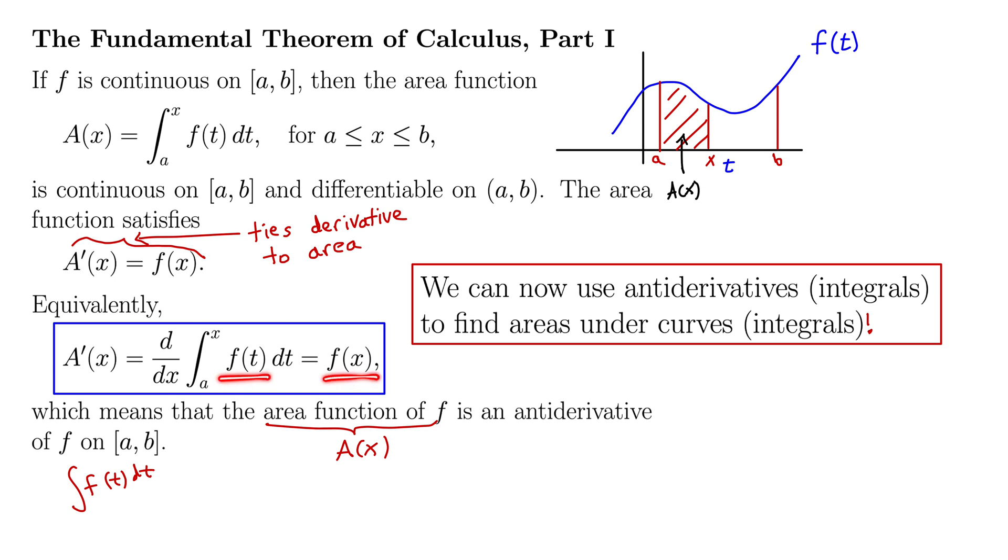It tells us that you just essentially the derivative of this integral are undoing each other and you're getting the function back. And so for now it's a function of x instead of t. That's all it tells us. Let's look at an example and I'll show you how so many people get this wrong.